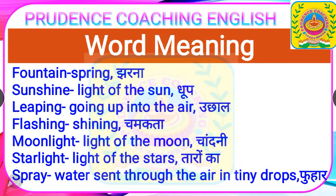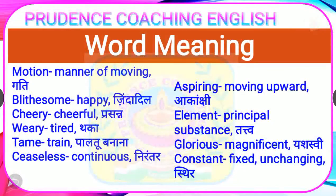Now we will discuss the difficult word meanings. Fountain means spring or jharna. Sunshine means light of the sun or dhup. Leaping means going up into the air or uchal. Flashing means shining or chamakta. Moonlight means light of the moon or chandani. Starlight means light of the stars or taroka. Spray means water sent through the air in tiny drops or fuhar.